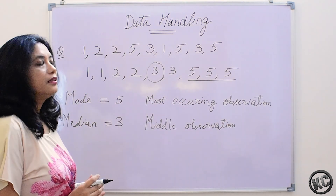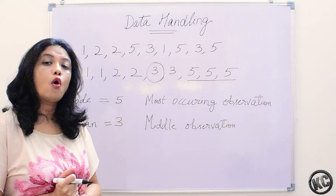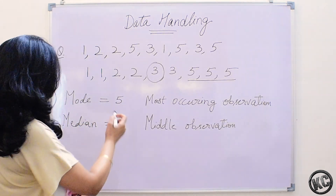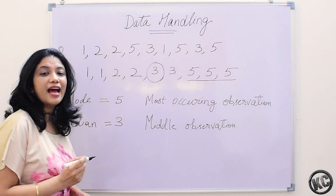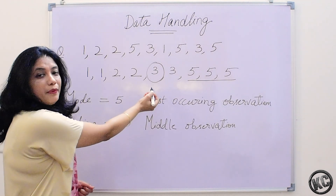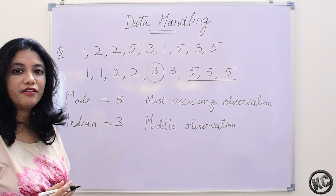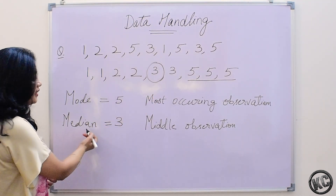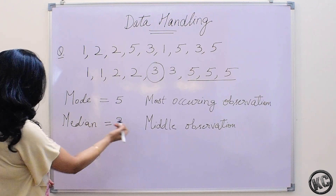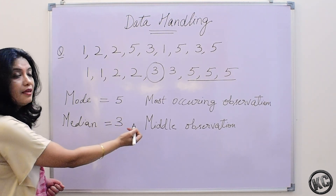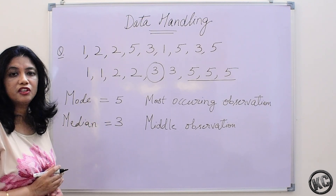This median we can get only when there are odd number of observations. Here the observations are 9, so we could get the median which is the middle observation. You can remember: median — mid — middle. So median is the middle observation. In this data median is 3.